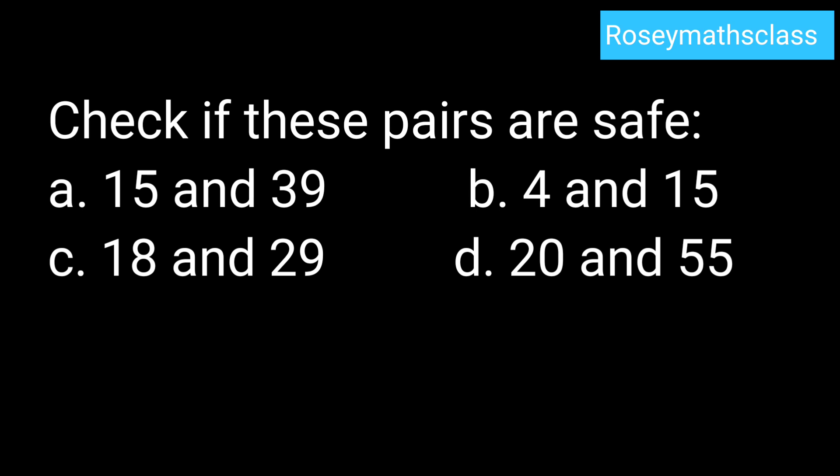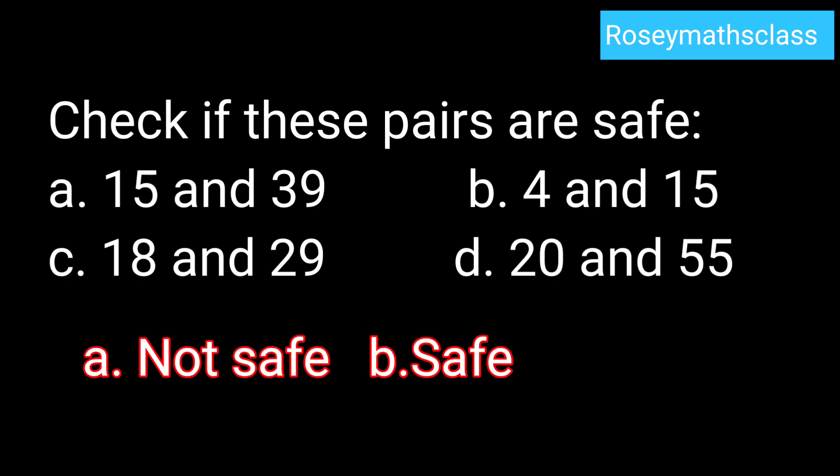Check if these pairs are safe. Four pairs are given. First one is 15 and 39. That is not safe because we can choose 3 as the jump size and reach both numbers. 4 and 15, that is safe.